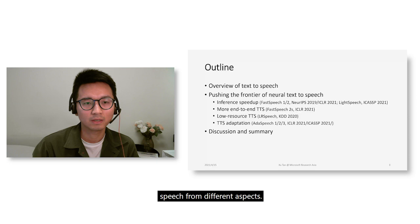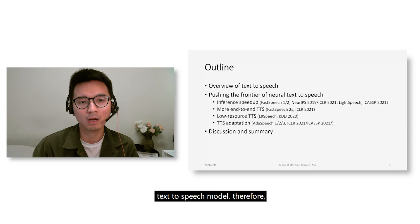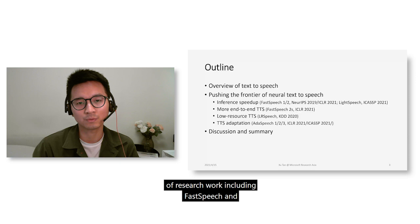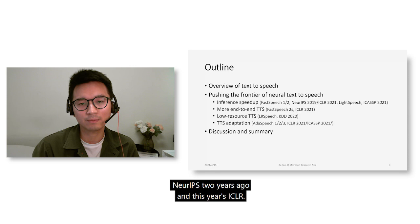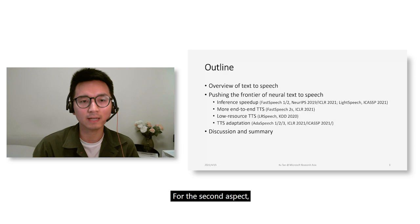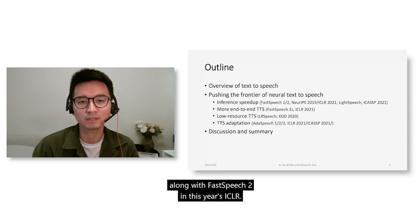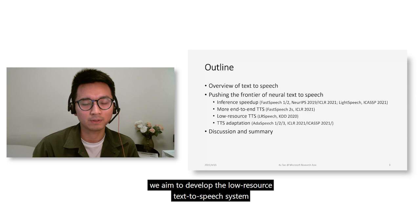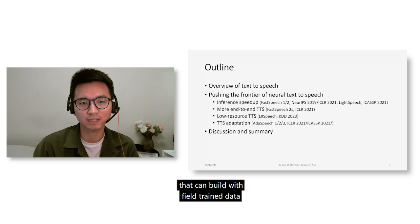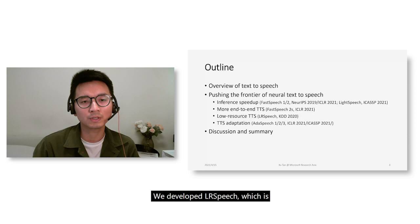For the first aspect, we aim to speed up the inference of text-to-speech, with works published at NeurIPS two years ago and this year's ICASSP. We further developed an advanced TTS model published at this year's ICASSP. For the second aspect, we aim to build an end-to-end TTS model, so we developed FastSpeech 2S, published alongside FastSpeech 2 at this year's ICLR.